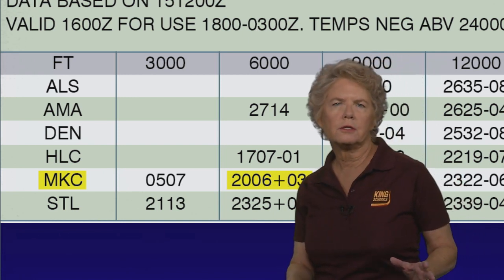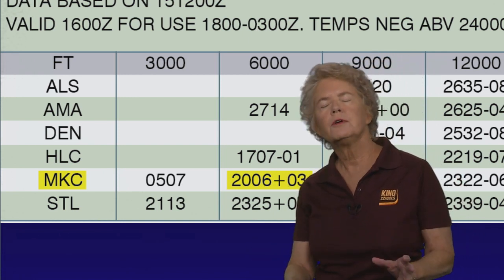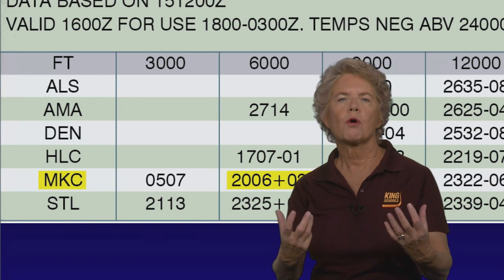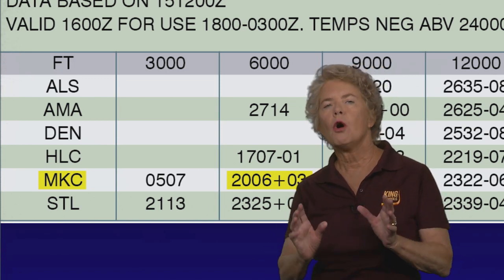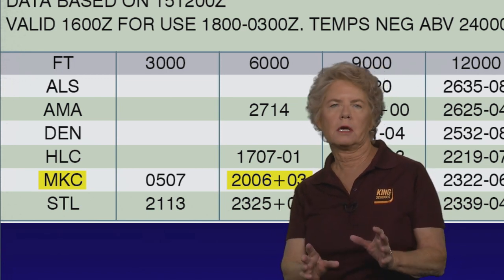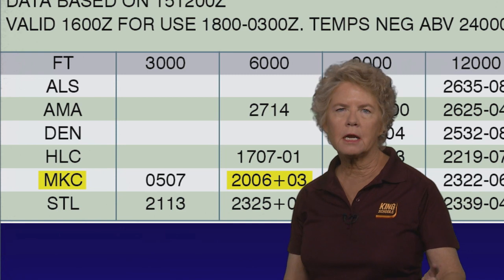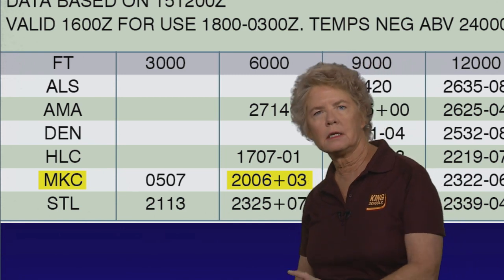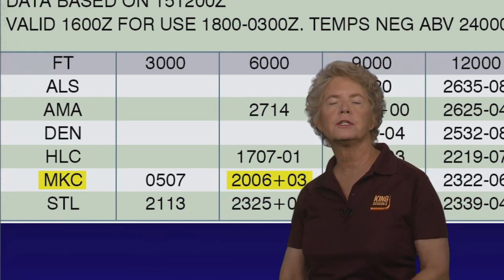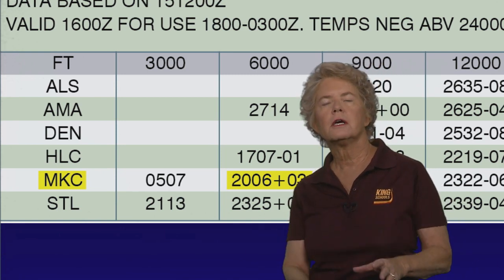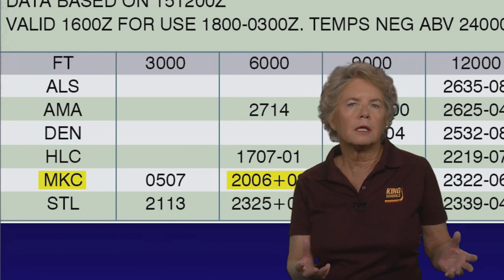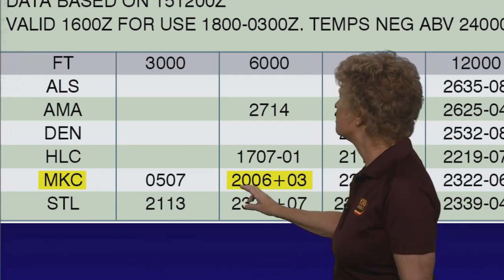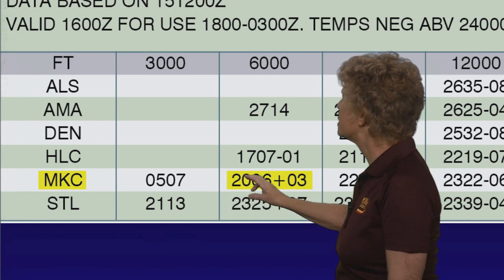The winds are given to you from true north for weather purposes. The only time you're going to get a magnetic wind is for takeoff and landing purposes, and you'll get that from the tower or the ATIS. So this is a wind from 200 degrees true.